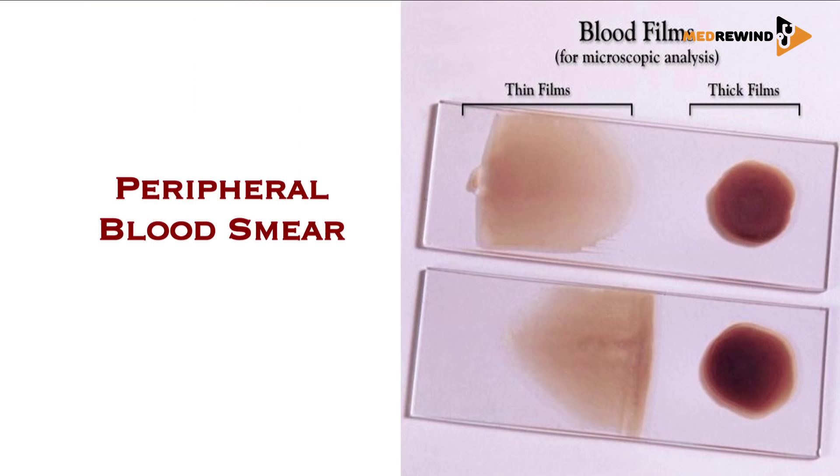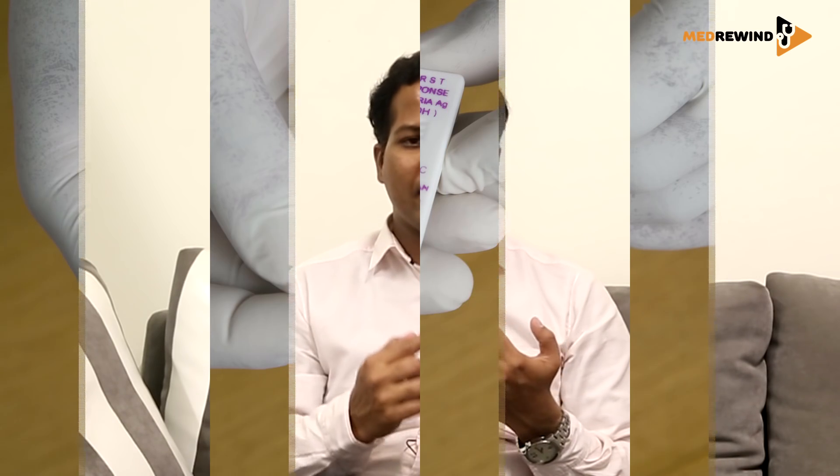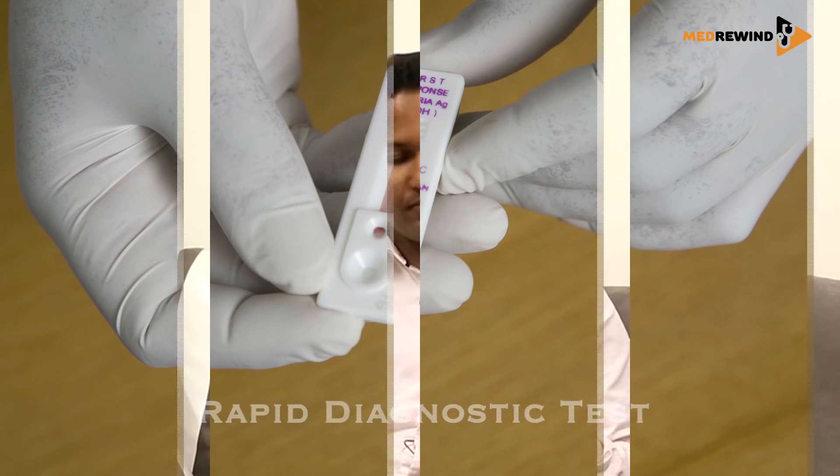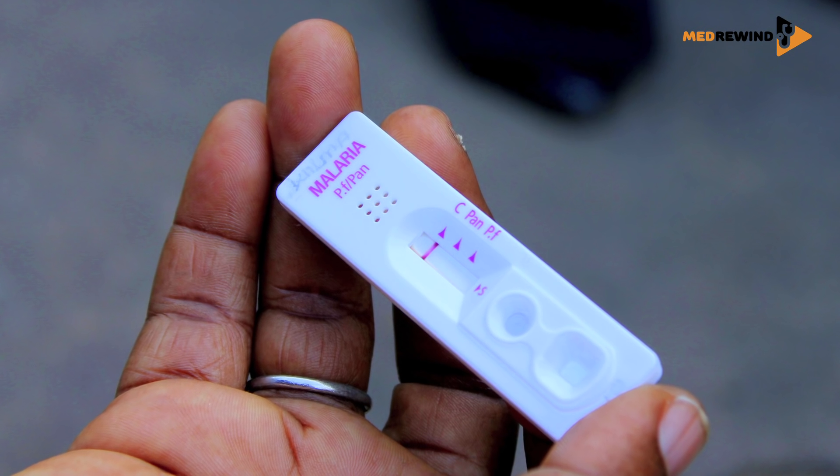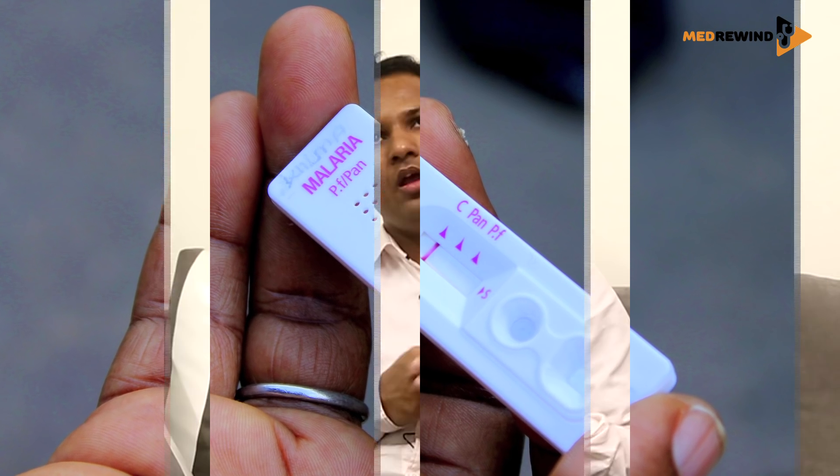You have to get the diagnosis of malaria confirmed using a lab test. Your options are the peripheral blood smear for malaria, or the rapid diagnostic test kits. Both tests can detect the two important types of parasite: vivax and falciparum. The patient could have vivax malaria, falciparum malaria, or mixed malaria with both together.